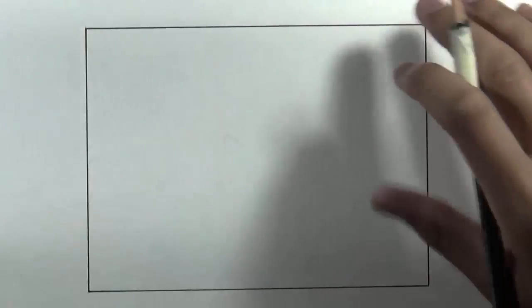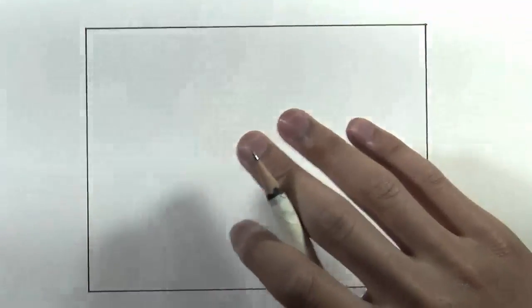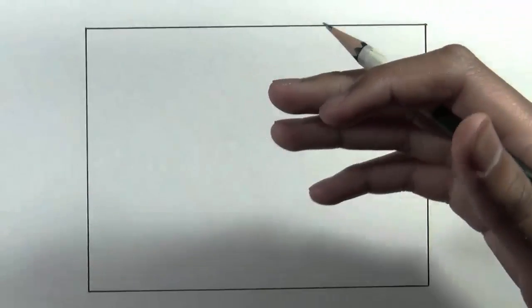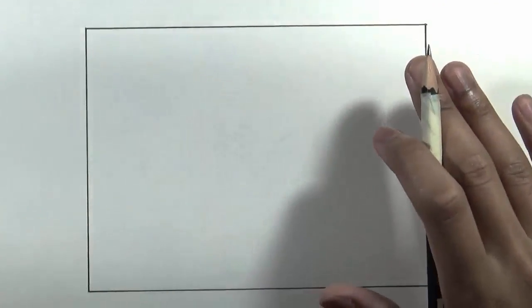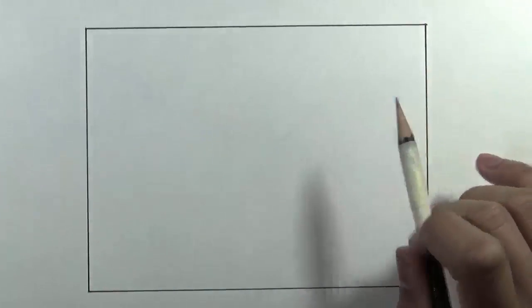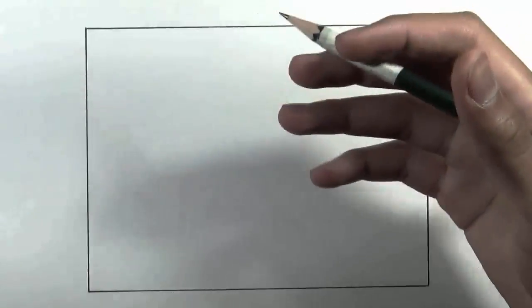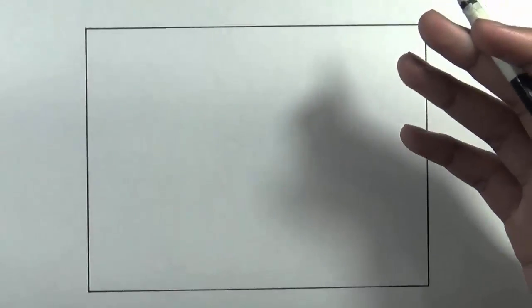What we did is we drew a box to help us structure the drawing. The top and the bottom lines are 16 centimeters from left to right, and the left and right lines are 12 centimeters from top to bottom. For those of you who want to know the measurement, that is pretty much it. So let's just get right into the tutorial.